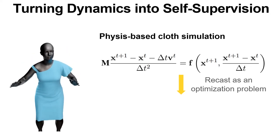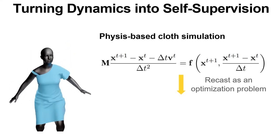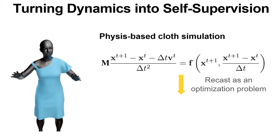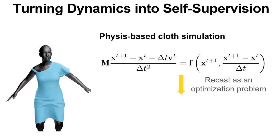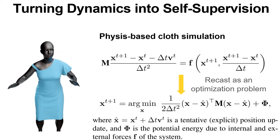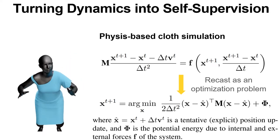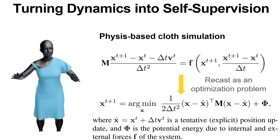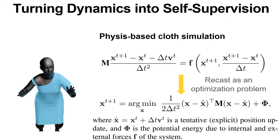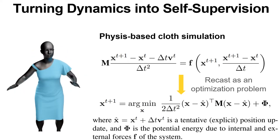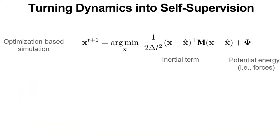Our key observation is to realize that the solution to the equations of motion discretized by Backward-Euler can also be formulated as an optimization problem. We propose to use the objective function for this minimization as a central ingredient of a self-supervised learning scheme. Therefore, analogous to the optimization-based simulation schemes, we propose a loss with two terms.